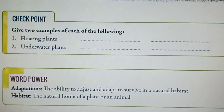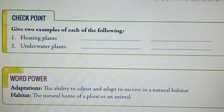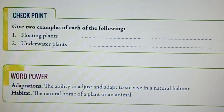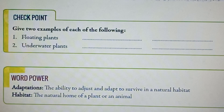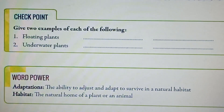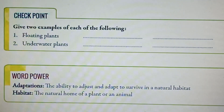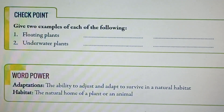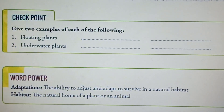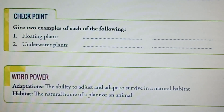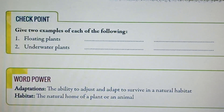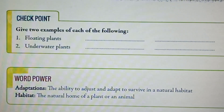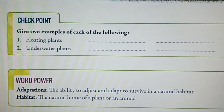Number 2, underwater plants. Pond weed, tape grass and hydrilla are the examples of underwater plants, so you can choose any two of them and write them.